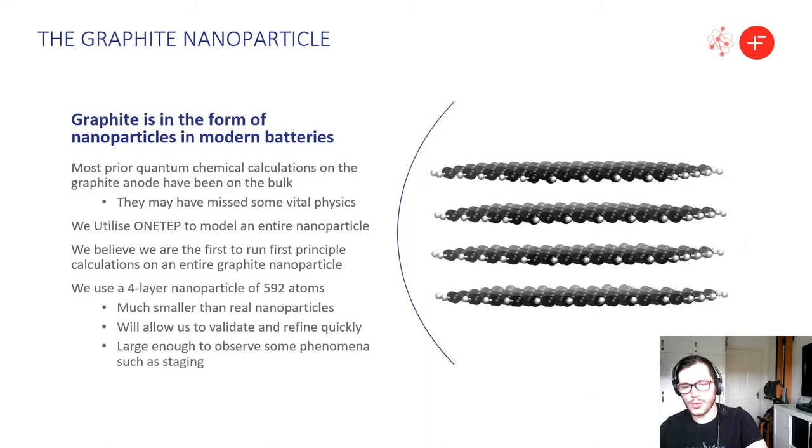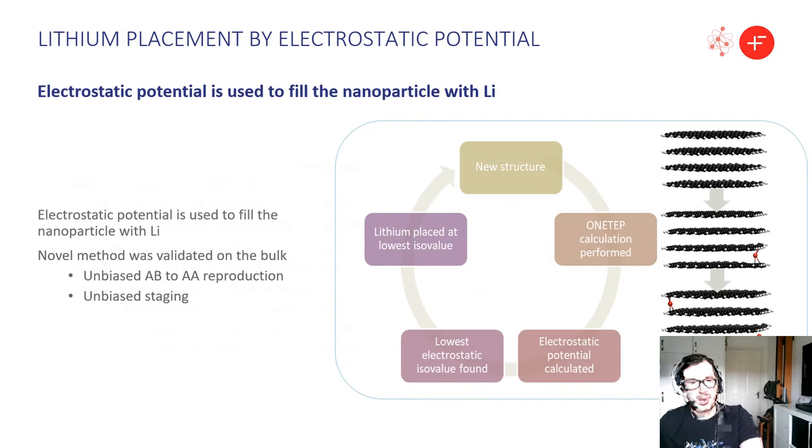So the nanoparticle that we chose is a four layer nanoparticle of around 592 atoms. This is a lot smaller than nanoparticles would be in real life. However, it should allow us to validate and refine quickly while still producing some of the phenomena that we spoke about at the beginning such as staging.